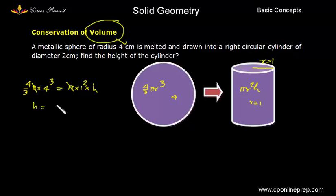So height is 4 cube or 4 to the power 4 divided by 3. So this will be the height of the cylinder.